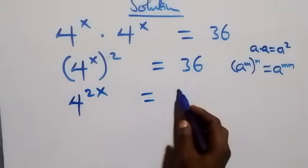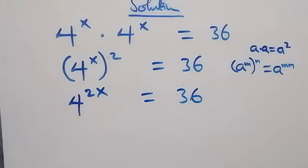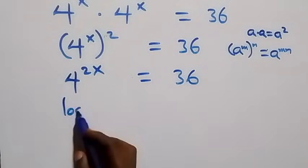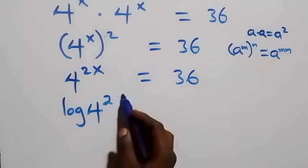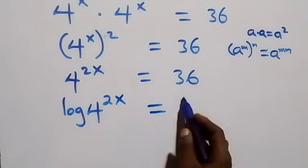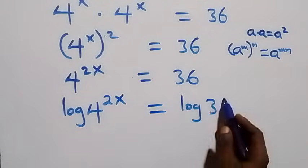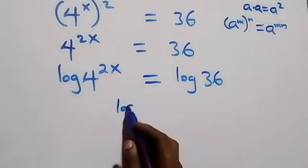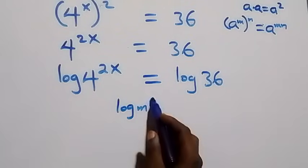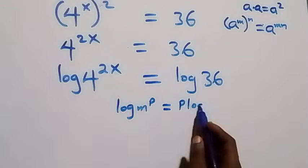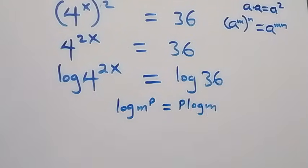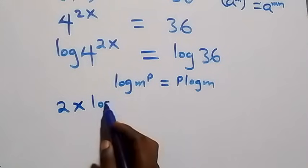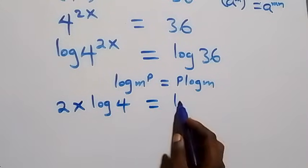So 4 raised to power 2x equals 36. The next step: we take the log of both sides, giving log(4 raised to power 2x) equals log 36. Then we apply the power rule of logarithms — log(m raised to power p) is the same as p·log m — so this becomes 2x·log 4 equals log 36.